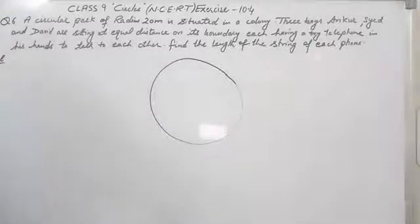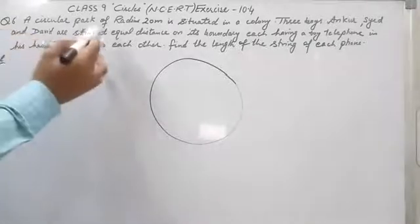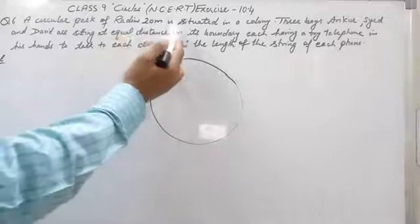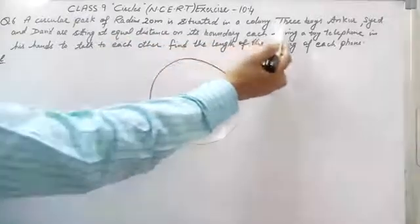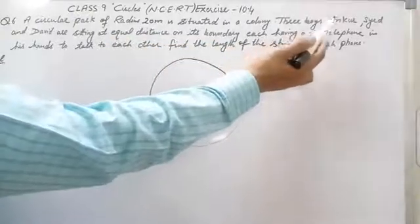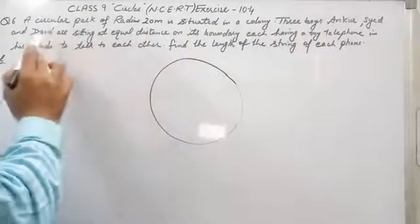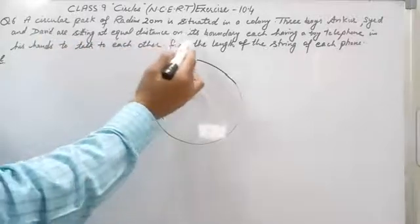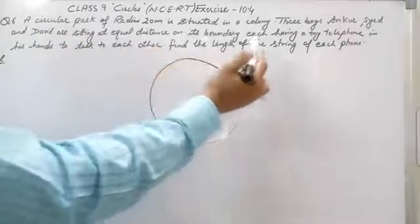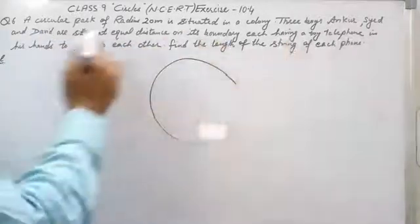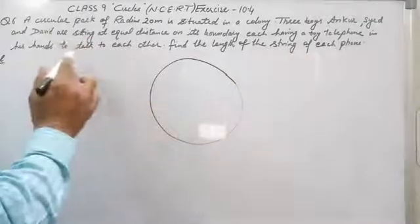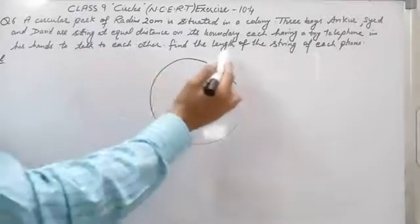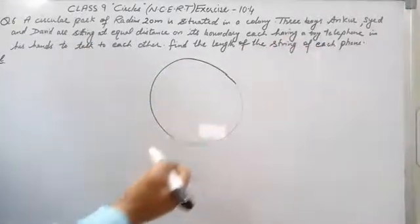A circular park of radius 20 meters is situated in a colony. Three boys, Ankur, Sayyid, and David, are sitting at equal distances on its boundary, each having a toy telephone in his hands to talk to each other. Find the length of the string of each telephone.